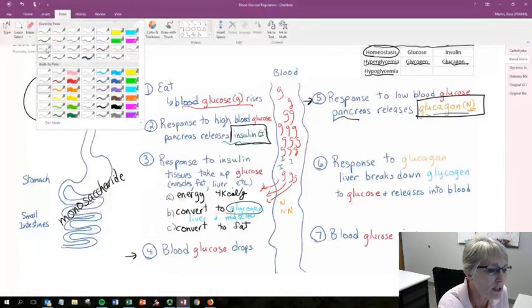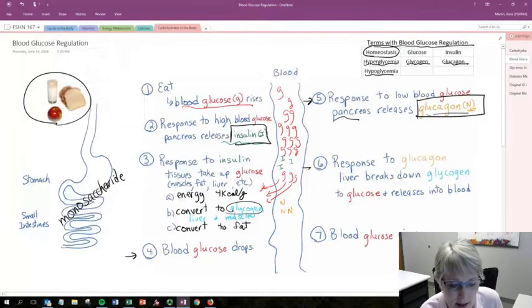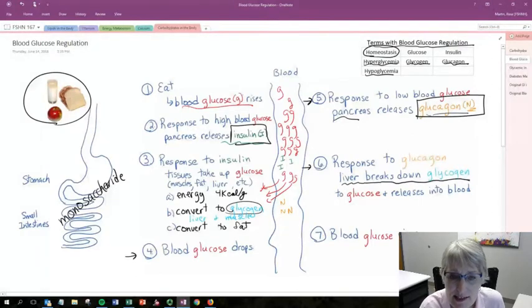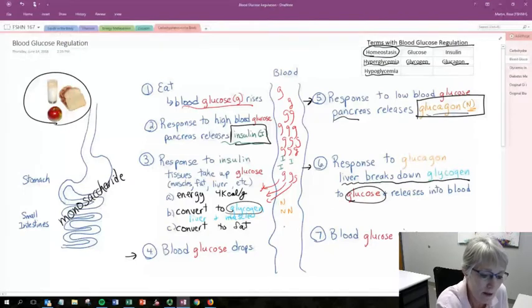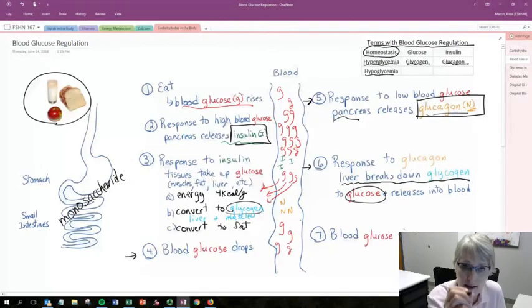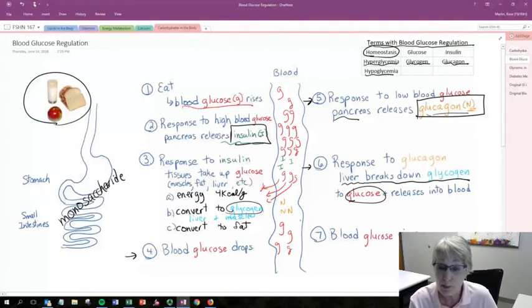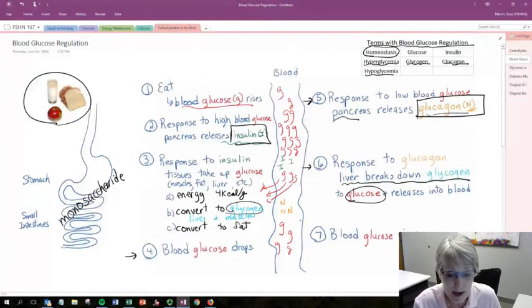Now in response to this glucagon rising in our blood, we are going to send the message to the liver to break down glycogen to glucose and release it back into the blood. So now we get glucose rising again because we're breaking down that liver glycogen and releasing it back into the blood.